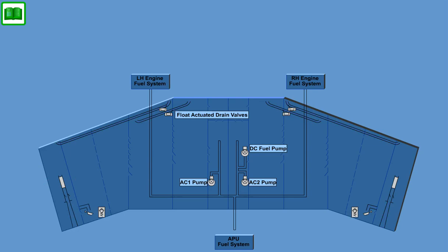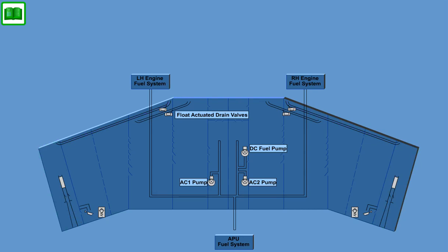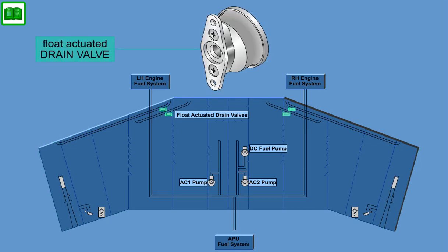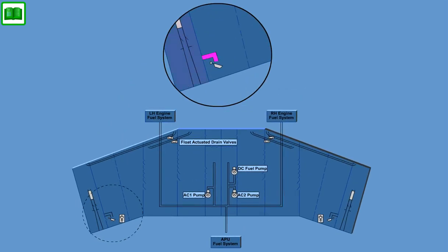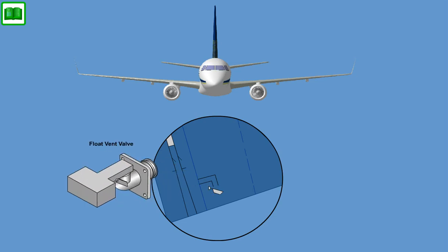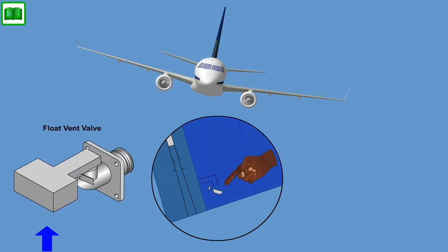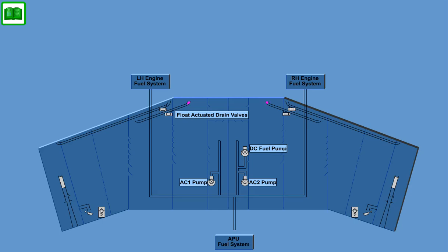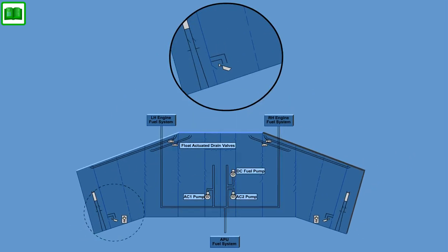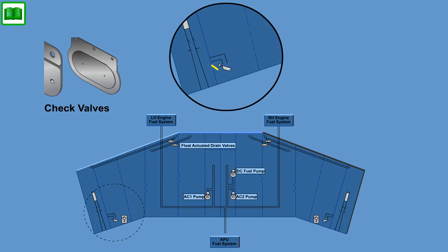The inboard part of the fuel tank is vented by the main vent line into the surge tank. Fuel which collects in the vent line can drain back into the tank when the fuel level decreases and the float-actuated drain valves open. Air from the outer tank can drain through the outboard vent line into the surge tank. If the fuel level rises during aircraft maneuvers, the float vent valve will close and prevent fuel from leaking into the surge tank. A secondary vent line vents all residual air out of the wing stub to the main wing. Fuel that has leaked into the surge tank can flow back into the fuel tank through a check valve when the fuel level inside the tank has decreased below the check valve.